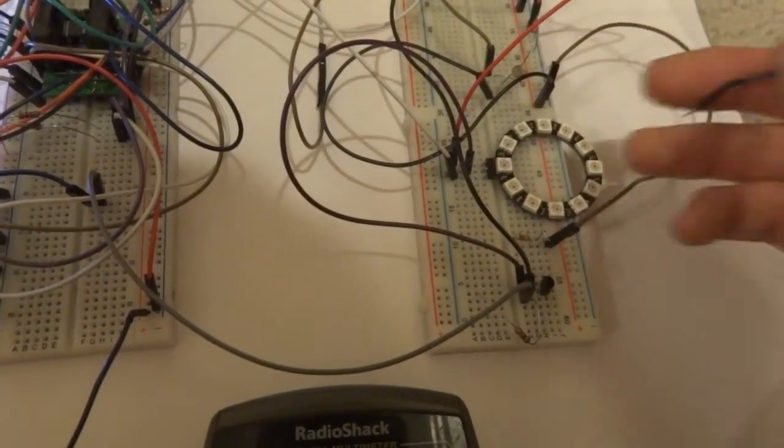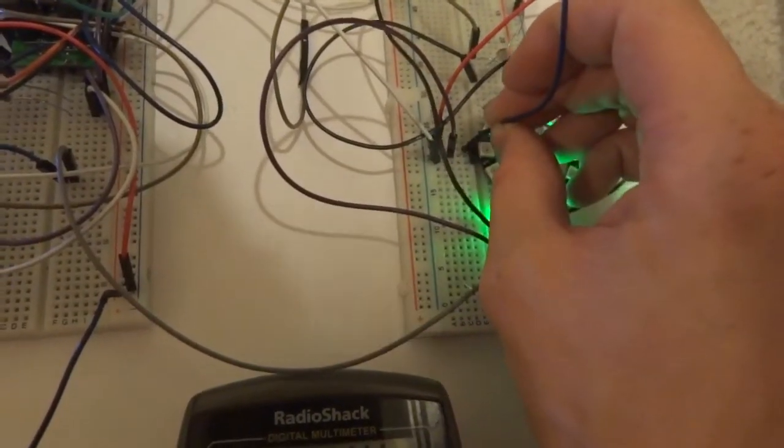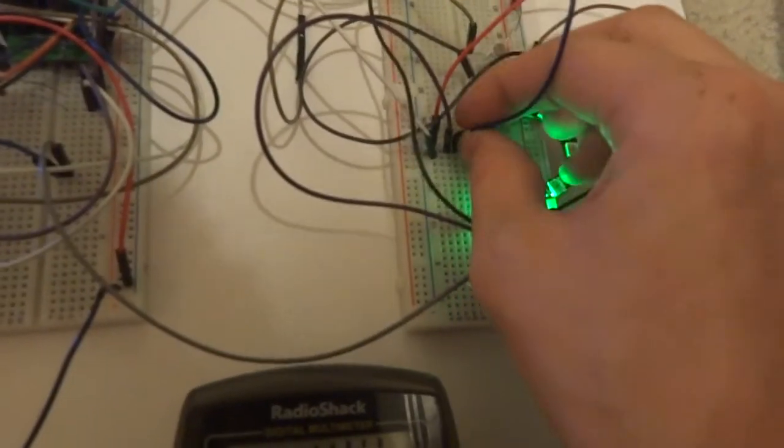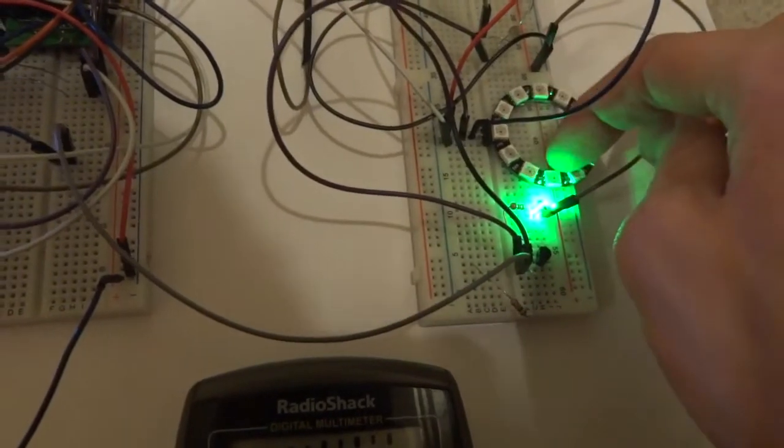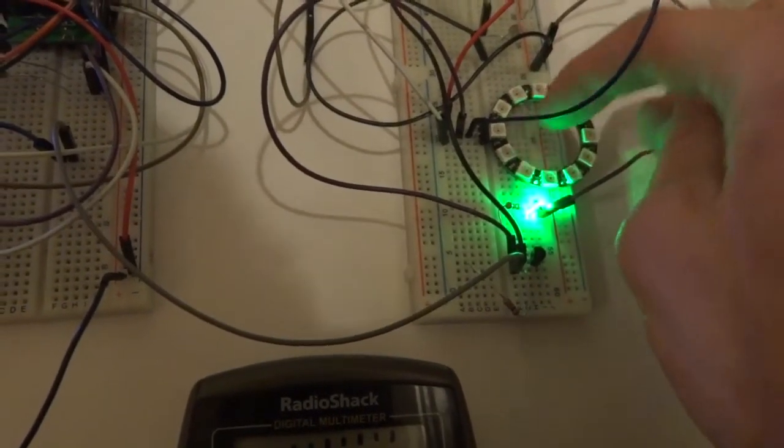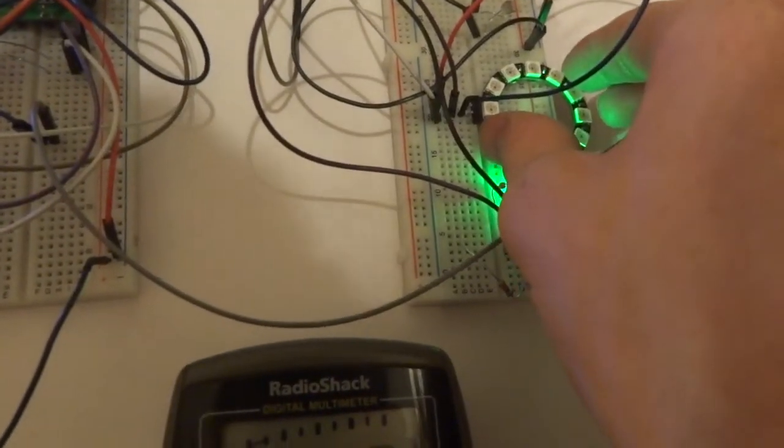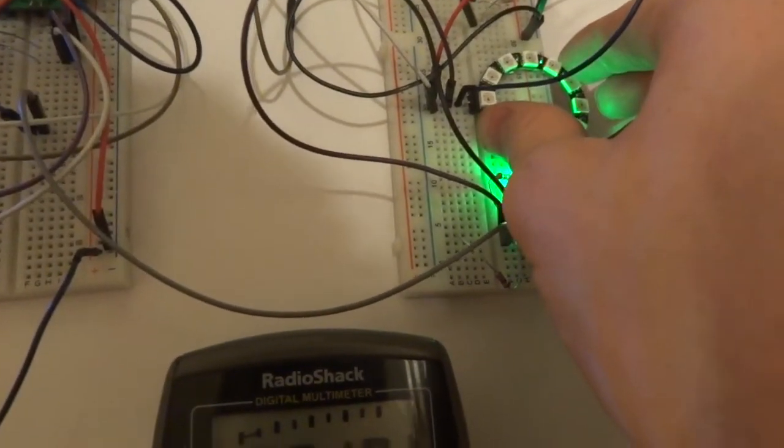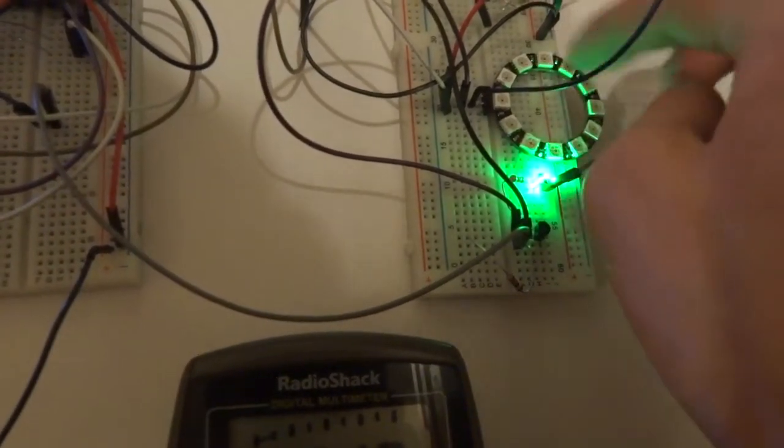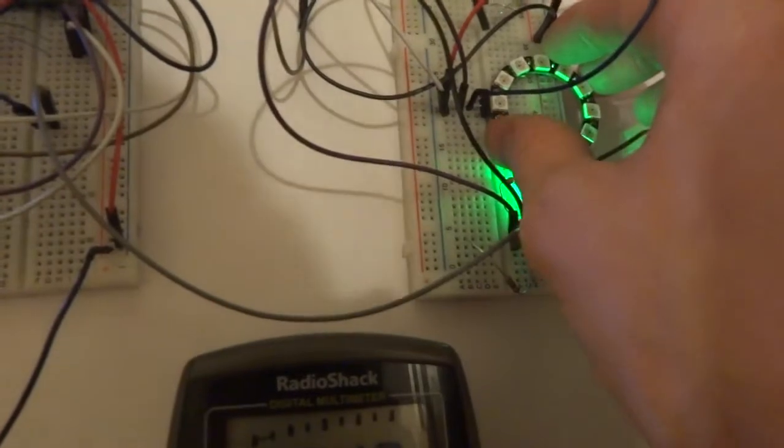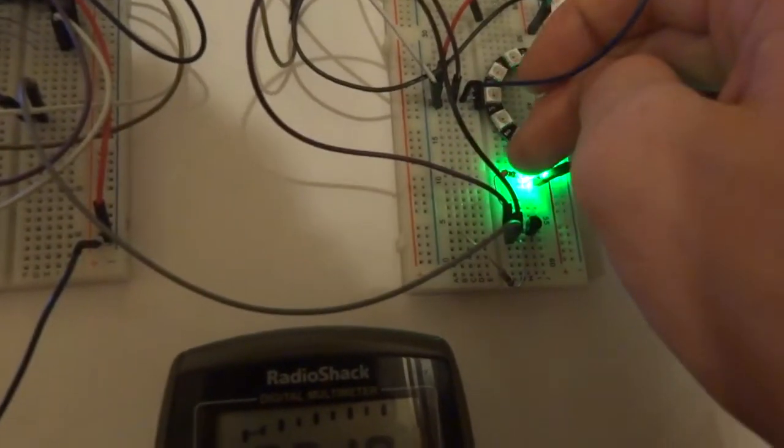So normally you would have the VCC connected directly up to the ring, which means that this ring would be getting power 100% of the time because positive and negative is always connected to it. But this is an issue if you're trying to save power. You don't want power always running to the LED ring if you're trying to make a power saving mode. And in my project, I need a power saving mode to where when the LED goes all the way dim.